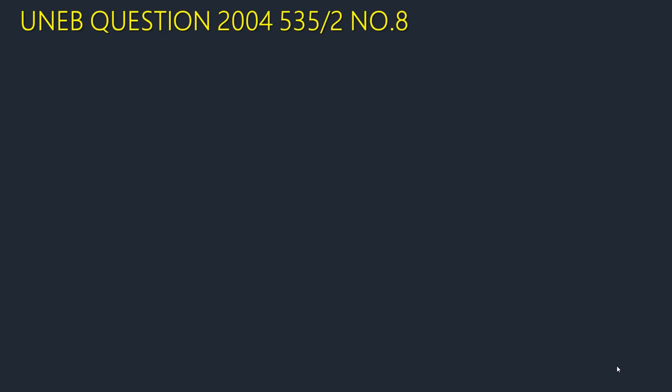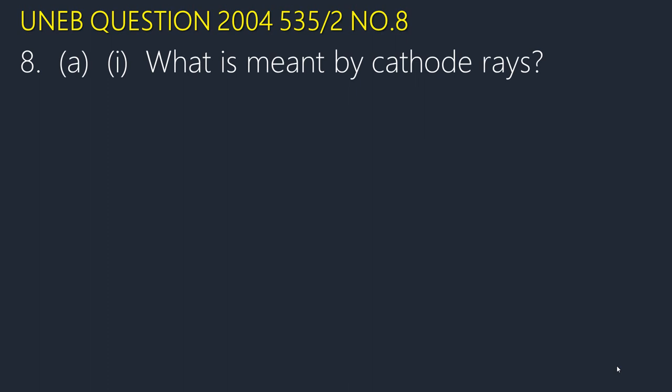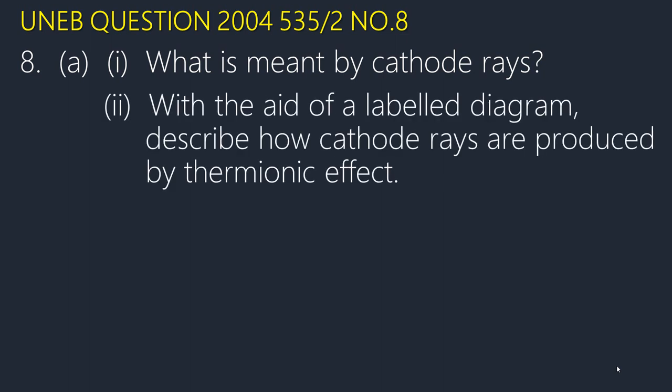In the previous video we handled the applications and uses of CROs in measurement of frequencies and studying of different waveforms. I want to add an extra question here: this was set in 2004 in paper 2, coded 535/2, number 8. Part A said: what is meant by cathode rays? We said cathode rays are streams of fast-moving electrons. Roman 2: describe how cathode rays are produced by thermionic emission — refer to the previous video, part 3.